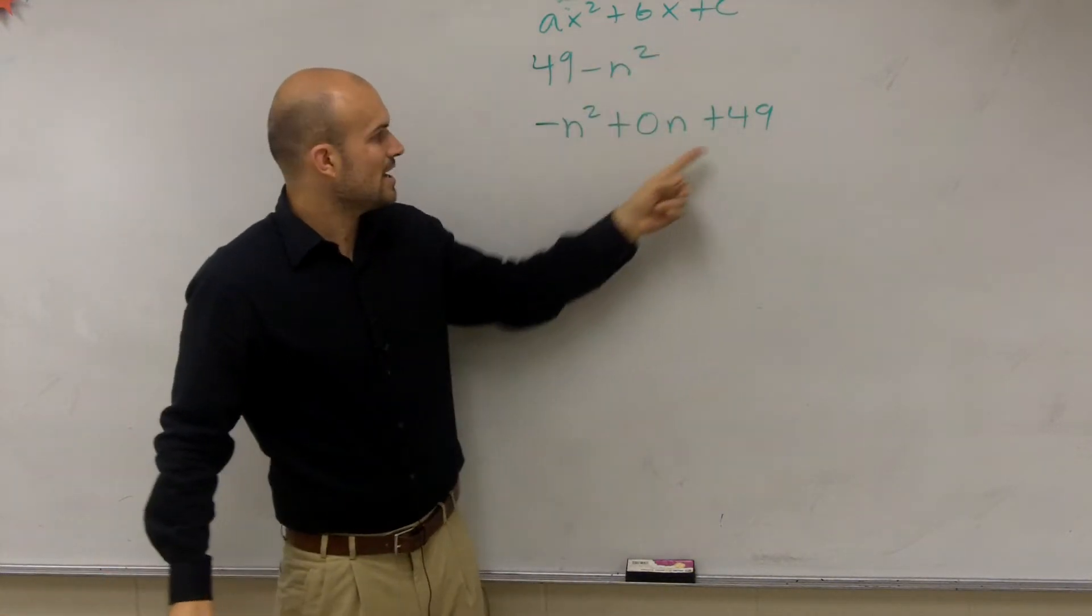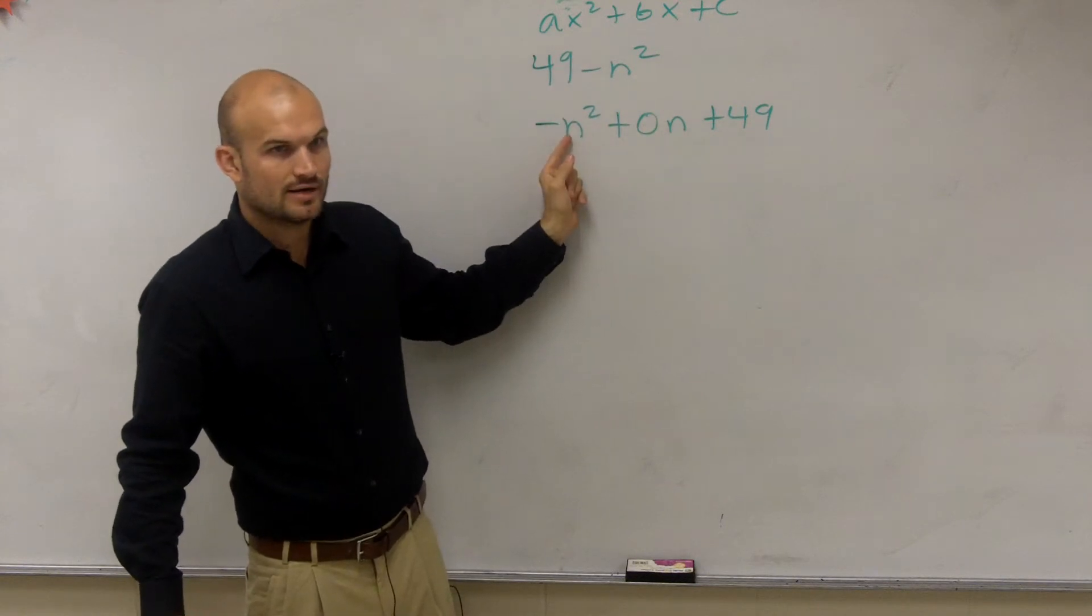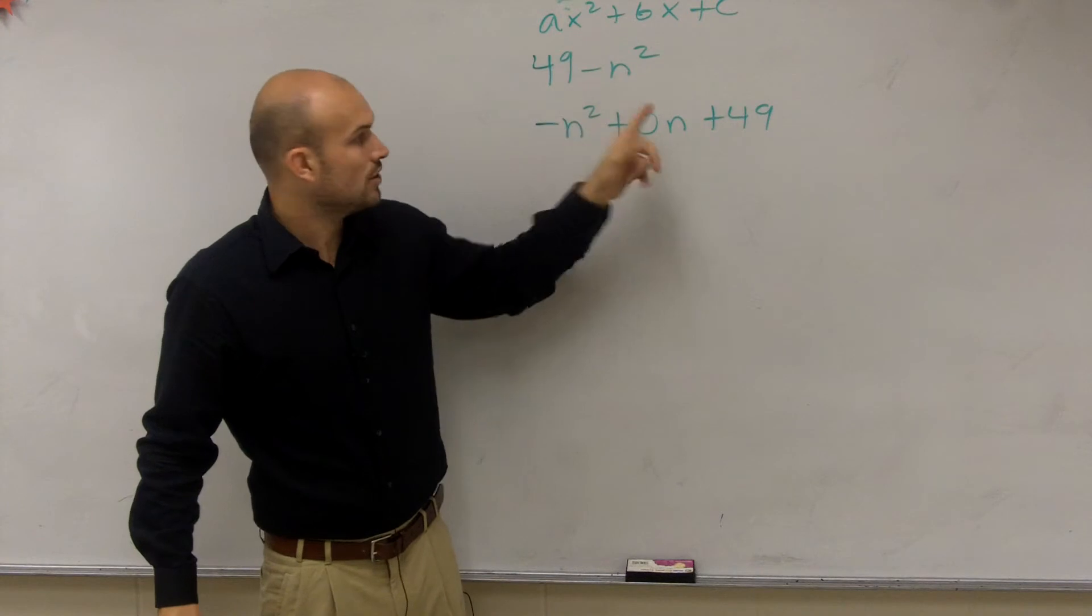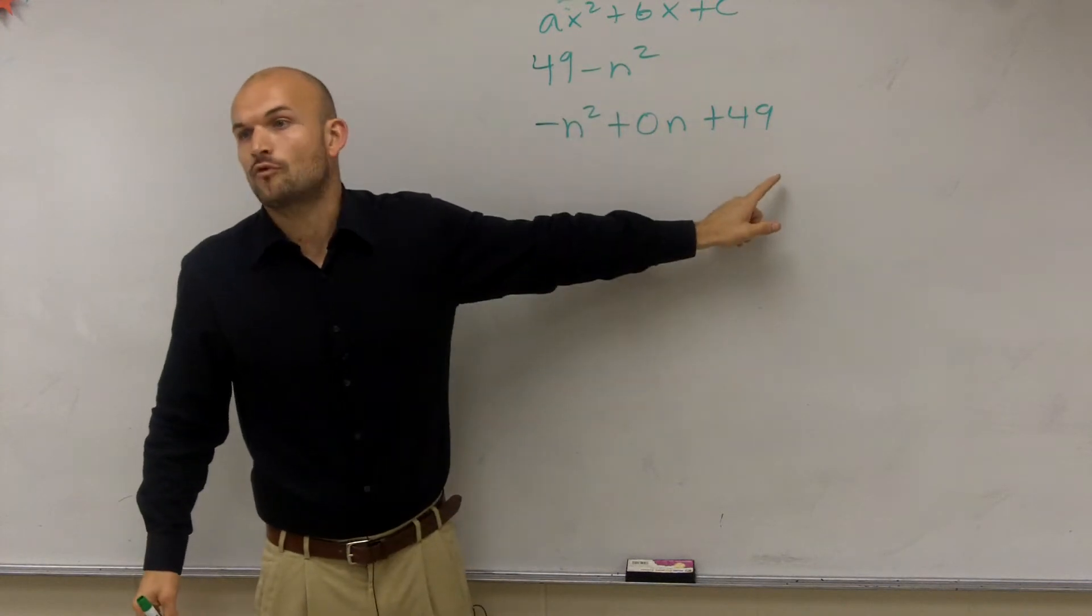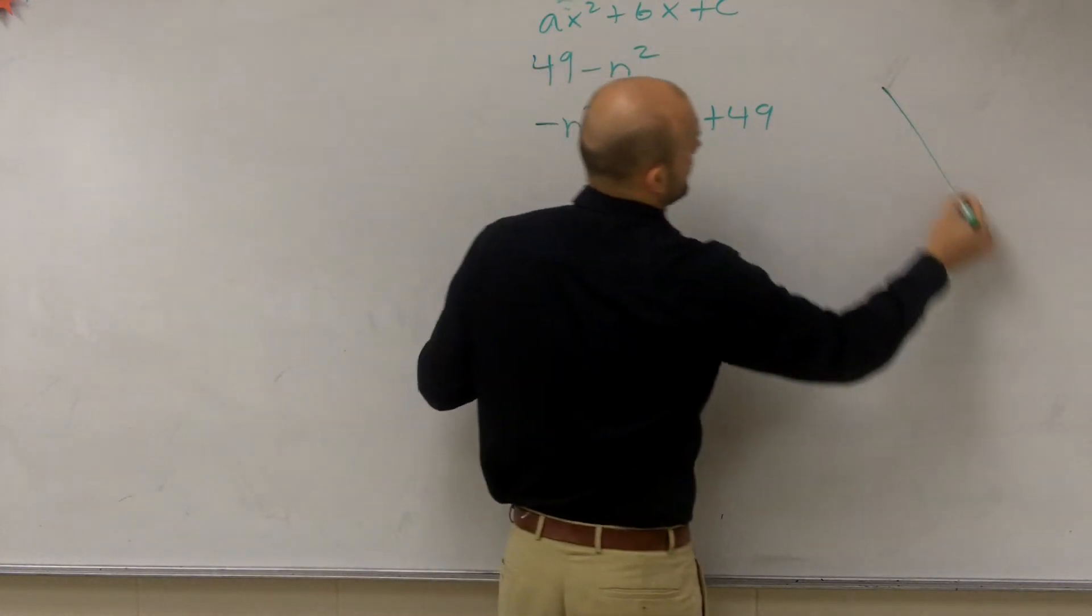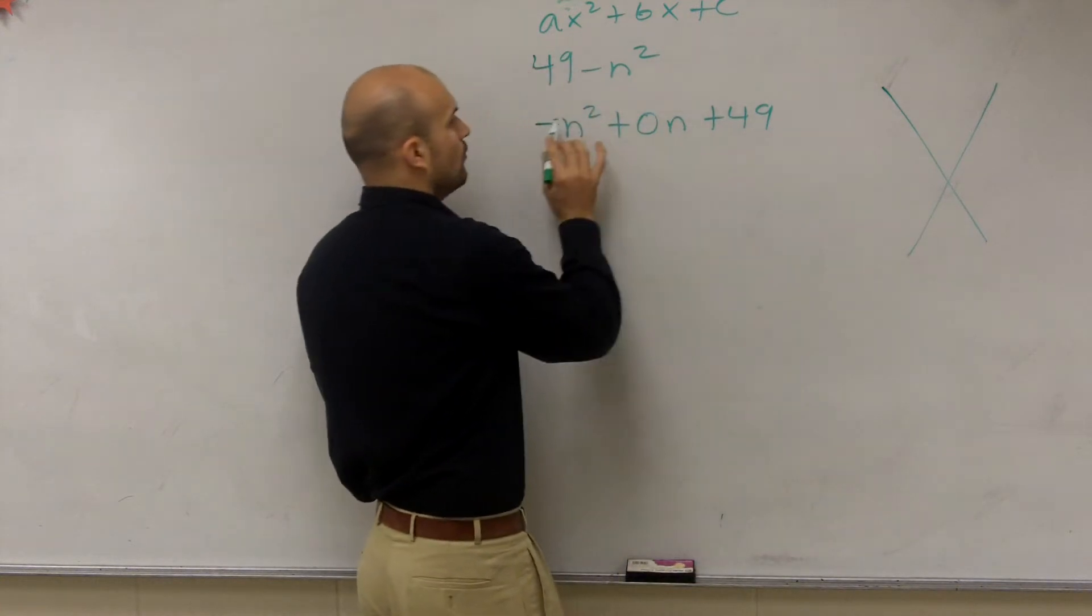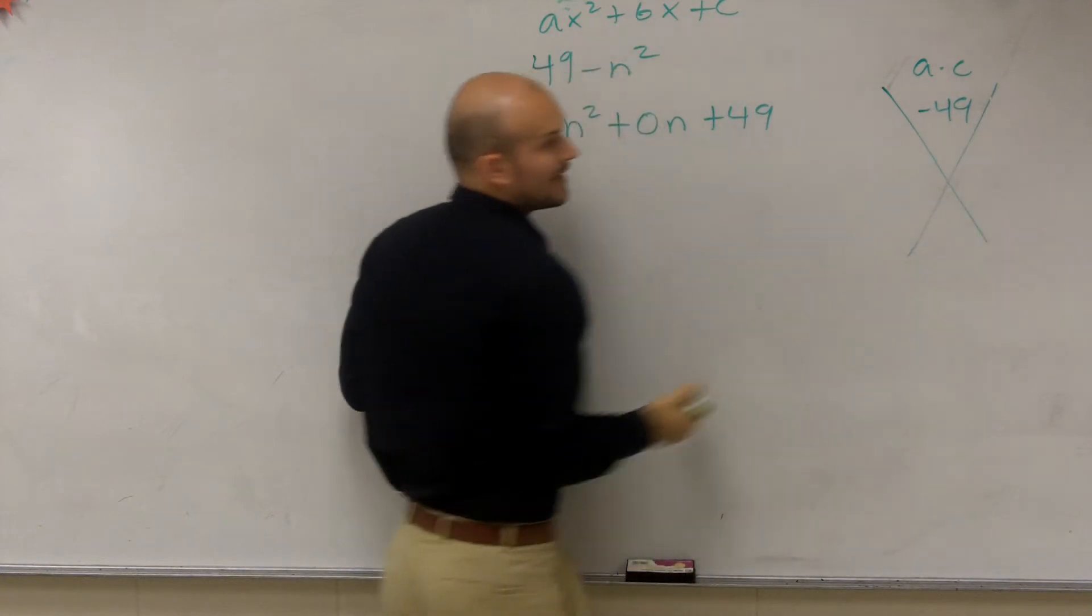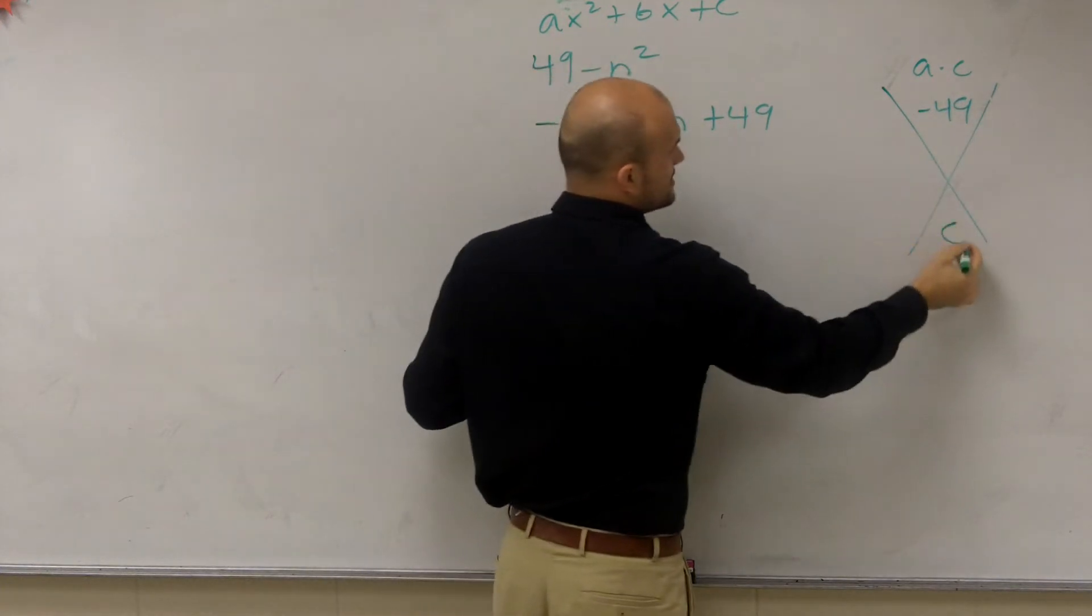So if I rewrite this in quadratic form, it's negative n squared. My a is negative 1, my b is 0, and my c is 49. So therefore, when I do my kind of diamond problem, negative 1 times 49, which is my a times my c, is negative 49. My b is equal to 0.